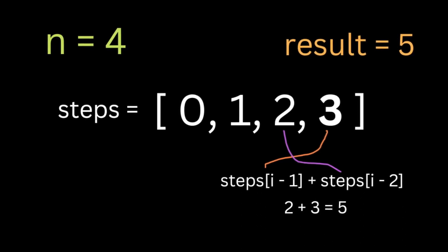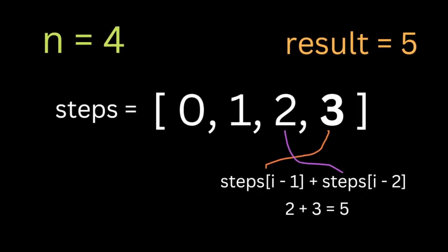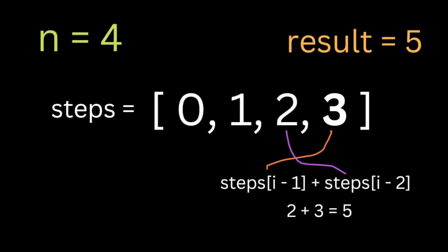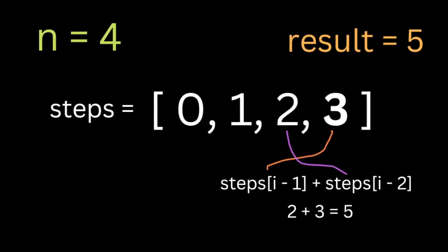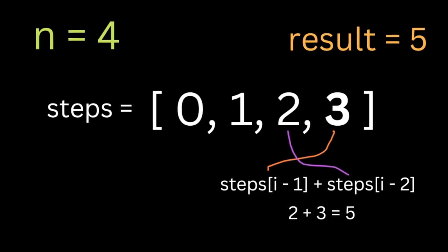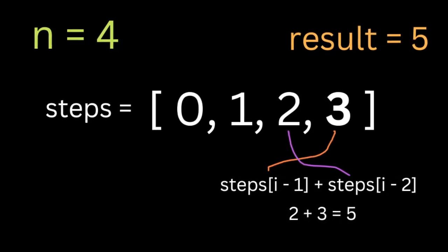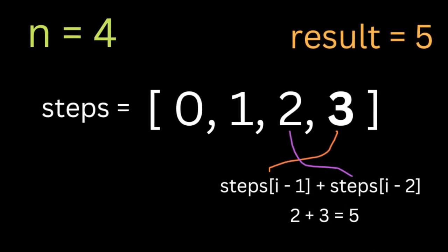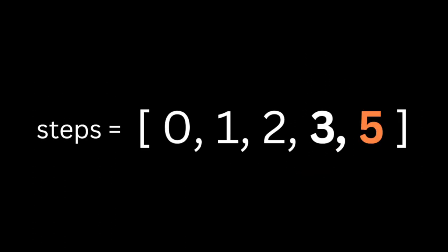we just take the two previous values and add them together. For example, if n is equal to three, we take two plus one and it's going to be equal to three. Now we know that step n is the final output, so we pop the last number inside the array and return it as the result.